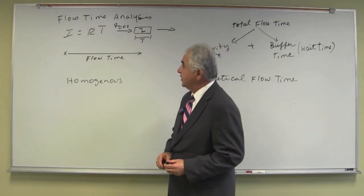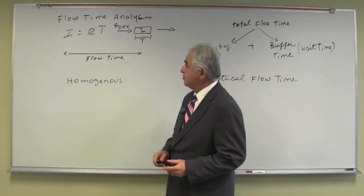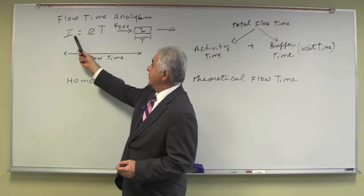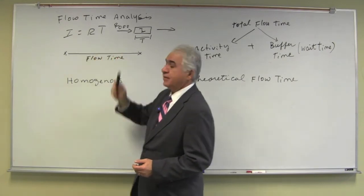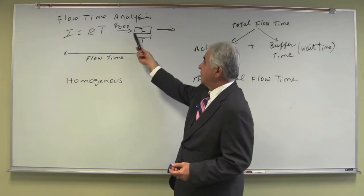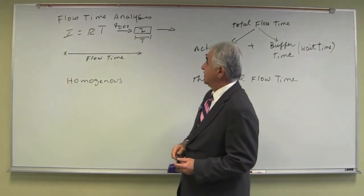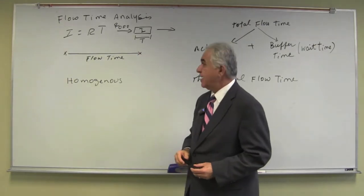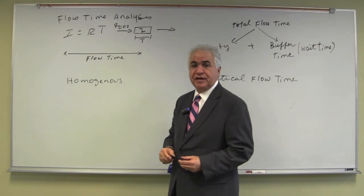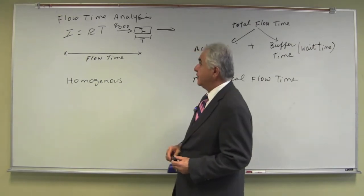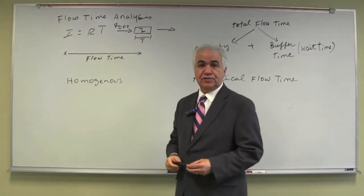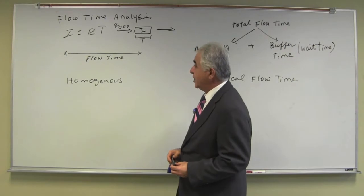We know the three process measures of throughput, inventory, and flow time, and they are related in this process map. Now just a brief discussion about this process measure, or flow time in a process.